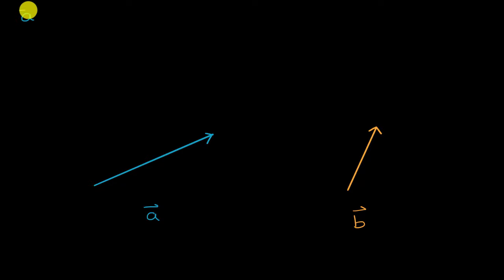So for example, how could we think about what it means to take vector A and add to that vector B? And as we'll see, we'll get another third vector. And there's two ways that we can think about this visually.